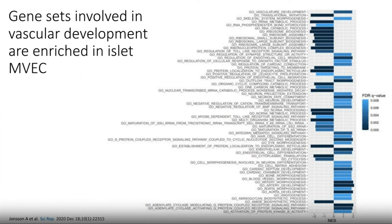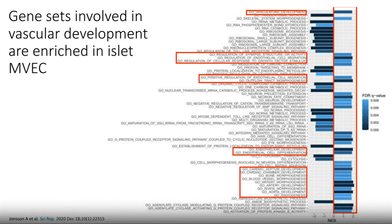Next, we plotted the top upregulated gene sets. The GO terms with enrichment in islet samples have a positive NES score as indicated on the x-axis. Highlighted in red, there are quite a lot of gene sets related to vascular and endothelial development that are upregulated in our islet samples.